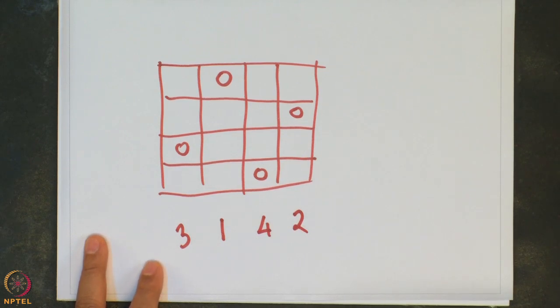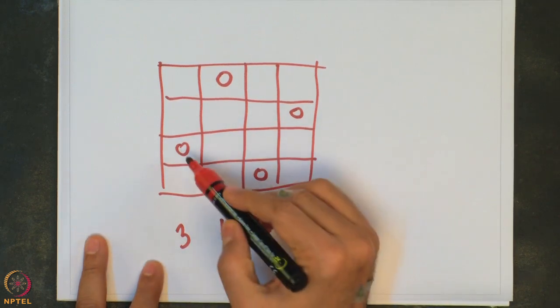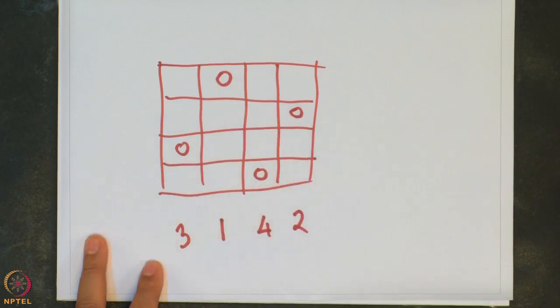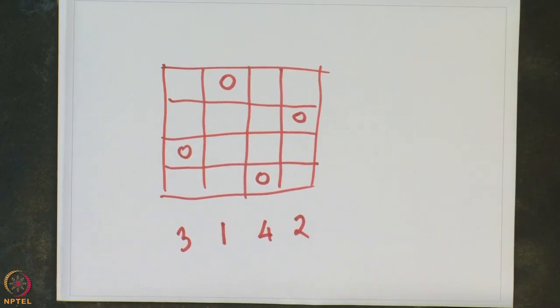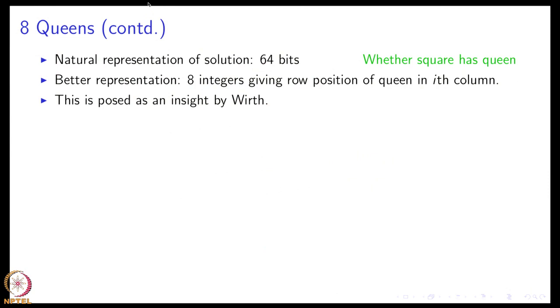So this is for a 4 by 4 board. So I will be giving you 4 integers and from this you will be able to know that the queen should be placed here, here, here and here. Similarly we can do something for 8. Incidentally you might see that these 4 queens are placed so that they do not capture each other. So this would be a solution to the 4 by 4 problem.